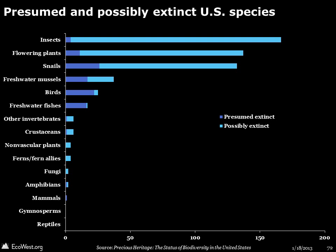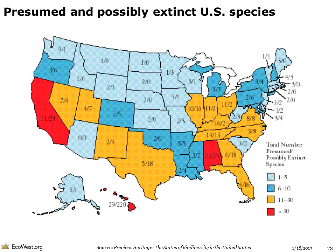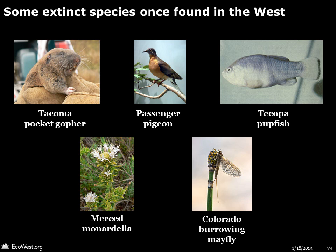It's important to remember that plenty of US species went extinct long before the ESA was enacted in 1973. Insects, plants, and snails lead the list of extinctions, but there are virtually no reptiles, mammals, or amphibians classified as presumed or possibly extinct. This map shows where extinctions are thought to have taken place. Hawaii, with 249, is off the charts, followed by Alabama with 96, and California with 35. Here are some examples of species once found in the West that are now considered extinct. Because these species are extinct, obtaining actual images is no longer possible.